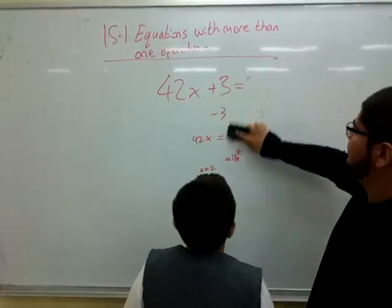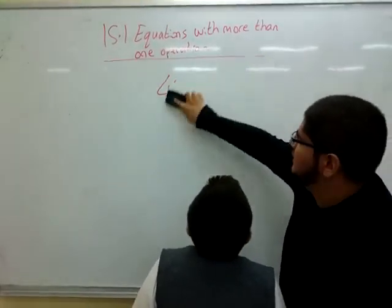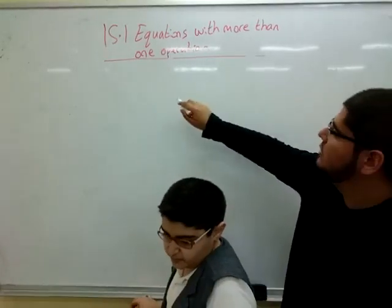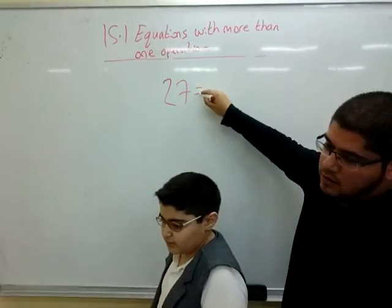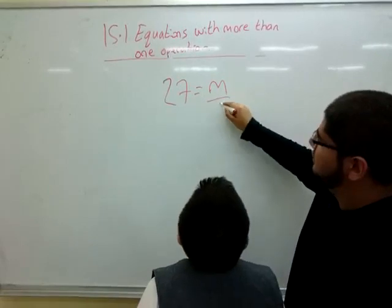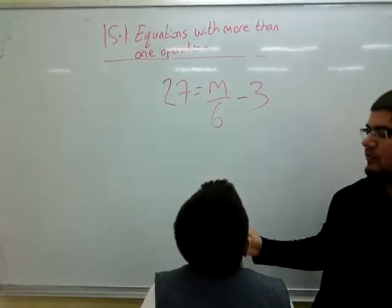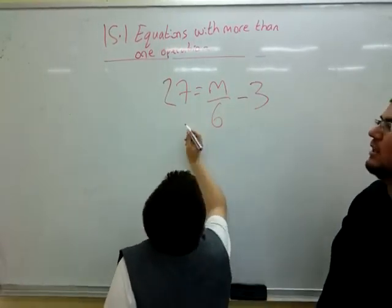Now I'm going to give you one more example. Give me that pen please. 27 equals m divided by 6, subtract 3. So the first step, yeah?